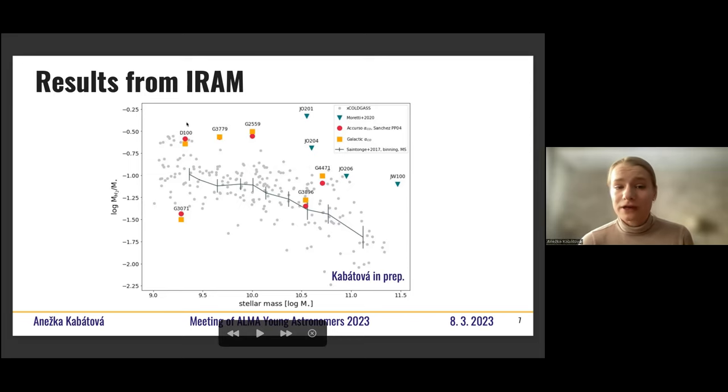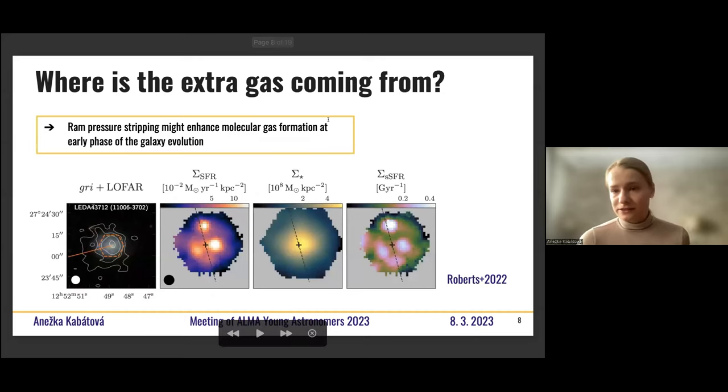And the result is that for all of my galaxies, there's also one more that's kind of unofficially in my sample because we have data for that, but it's not involved in the original sample. So you can see that for all of those, but one little that's almost entirely stripped, the molecular gas amount is much larger than for field galaxies. So that was surprising, right? And we started to ask the question, where is the extra gas coming from?